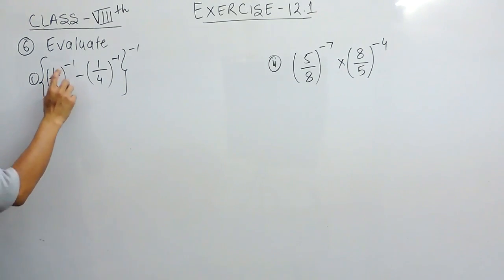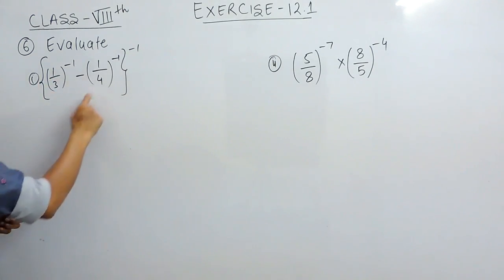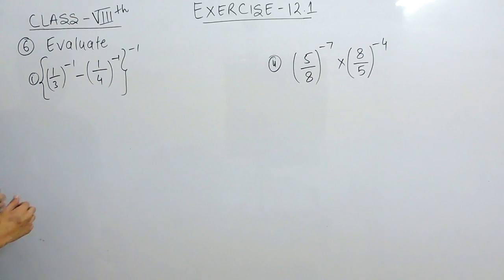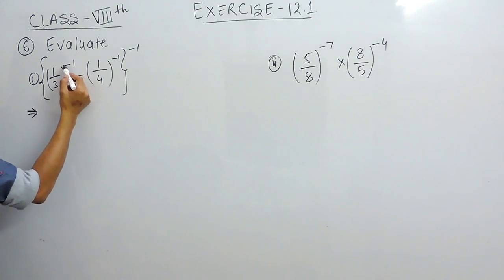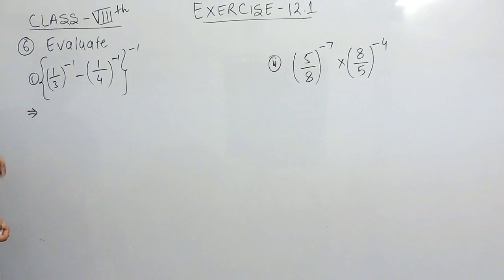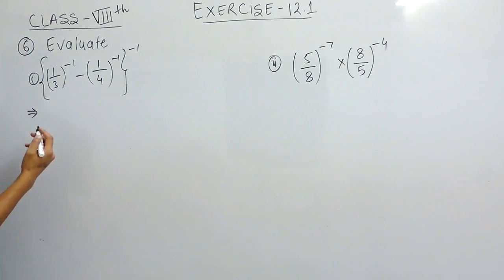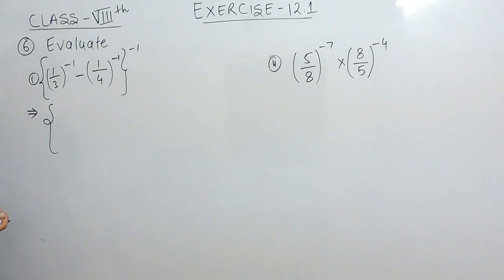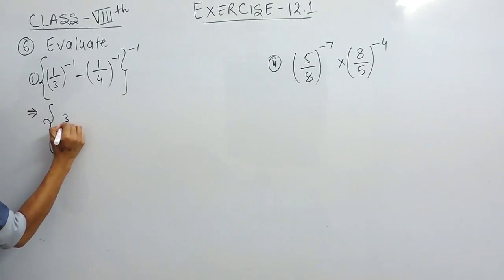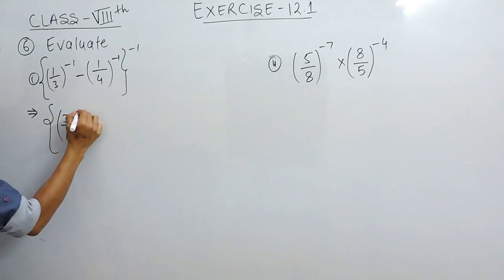Here it is written that 1 upon 3 raise to power minus 1, and 1 upon 4 raise to power minus 1, whole raise to power minus 1. To solve this, first of all we have to convert the power into positive. We know that whenever we have to convert a negative power into positive, and the base is fractional, we reciprocal the denominator and numerator. Simply means replace denominator with numerator and numerator with denominator. So this can be written as 3 upon 1, and the power gets automatically changed into positive.